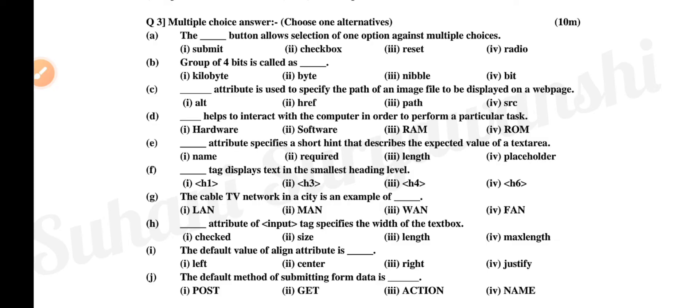Next aahe E, dash attribute specifies a short hint that describes the expected value of a text area: name, required, length, placeholder. F, dash tag displays text in the smallest heading level: H1, H2, H4, H6. G, the cable TV network in a city is an example of LAN, MAN, WAN, FAN. H, dash attribute of input tag specifies the width of the text box: checked, size, length, max length. I, the default value of align attribute is left, center, right, justify. J, the default method of submitting form data is post, get, action, name.